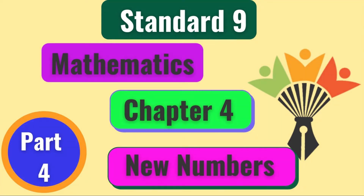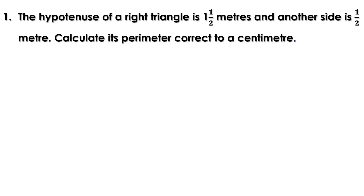Welcome to Maths Companion. In the last video we discussed the section on addition and subtraction. There was a homework — let us check the answer first. The hypotenuse of a right triangle is one and a half meters and another side is half a meter. Calculate its perimeter correct to a centimeter.